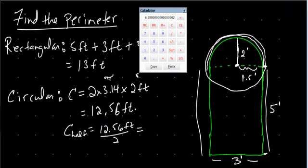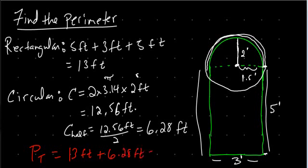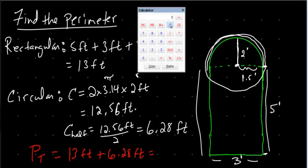So for our total perimeter, the total is equal to the rectangular portion which we got to be thirteen feet, plus the half circle which we got to be six point two eight feet. Using the calculator, six point two eight plus thirteen gives us a total perimeter of nineteen point two eight feet.